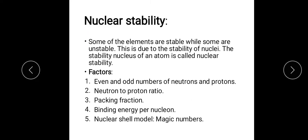Number one topic: nuclear stability. What is nuclear stability? Some of the elements are stable while some are unstable. This is due to the stability of their nuclei. The stability of the nucleus of an atom is called nuclear stability.